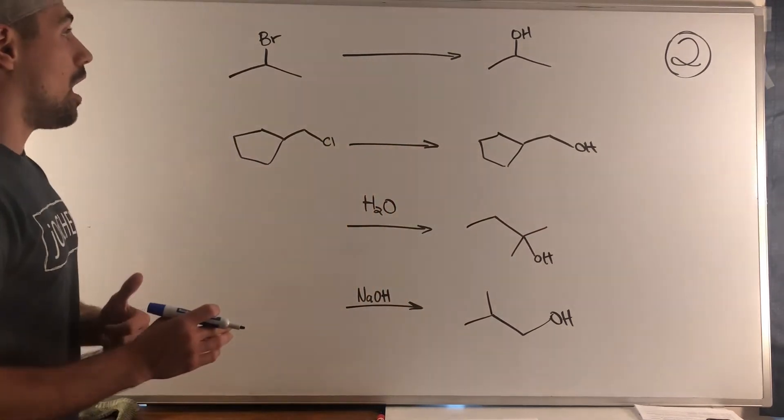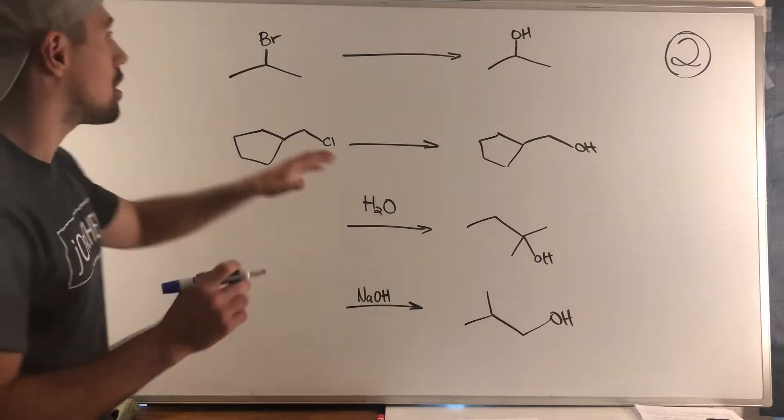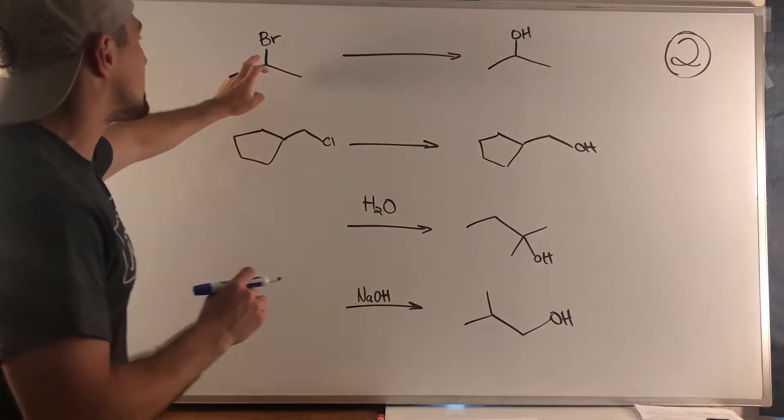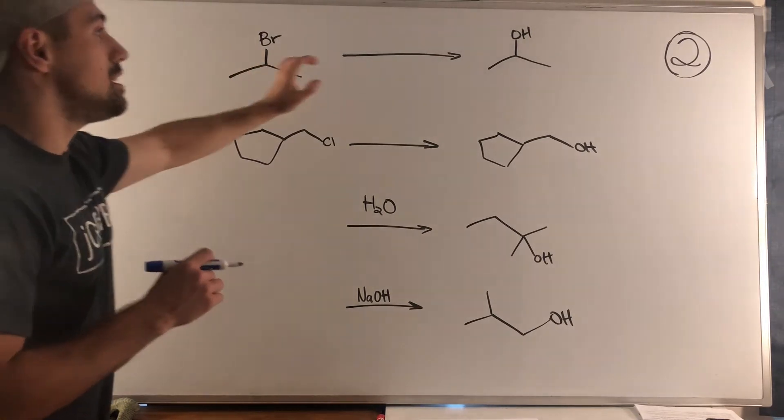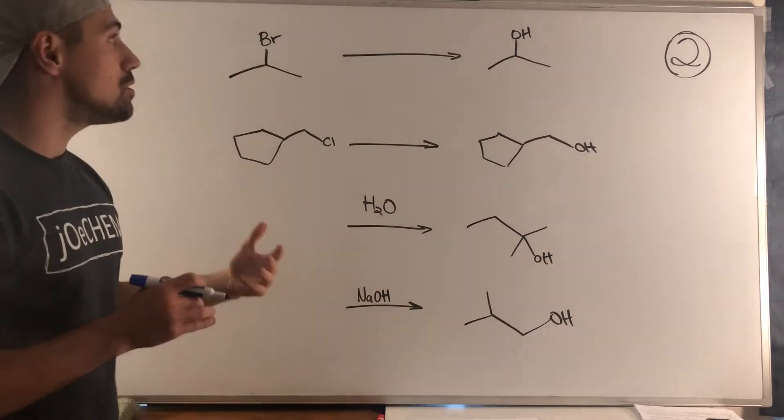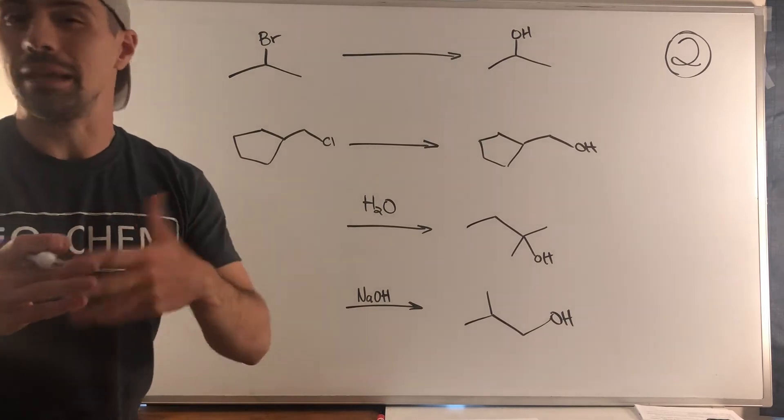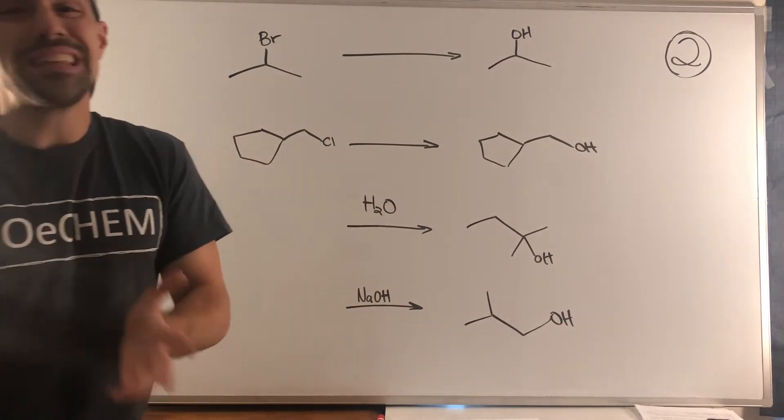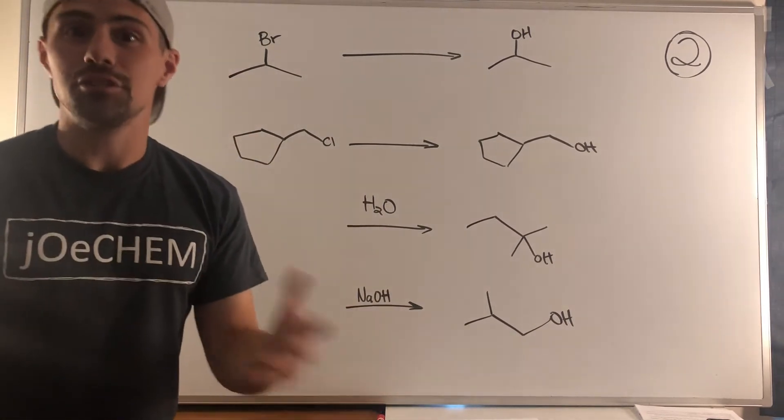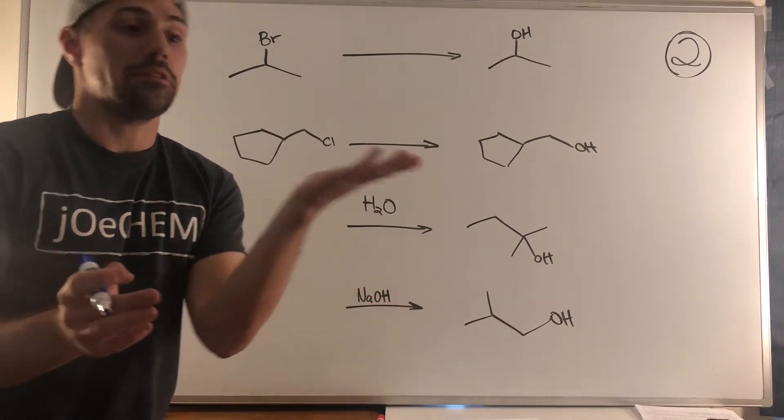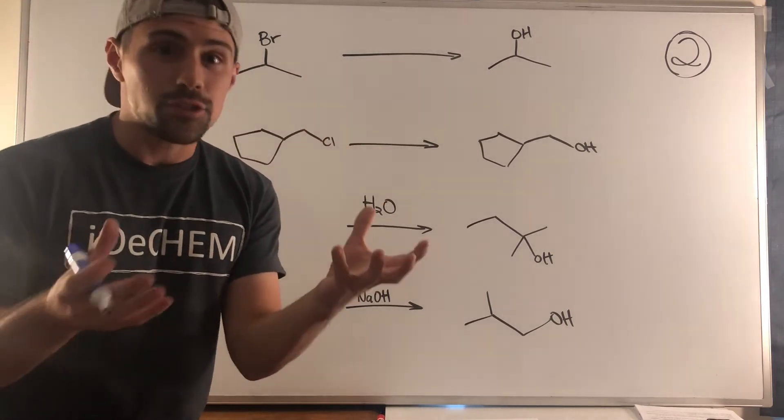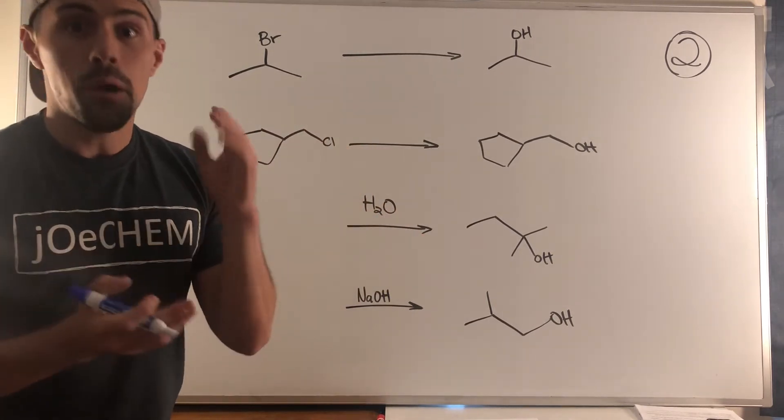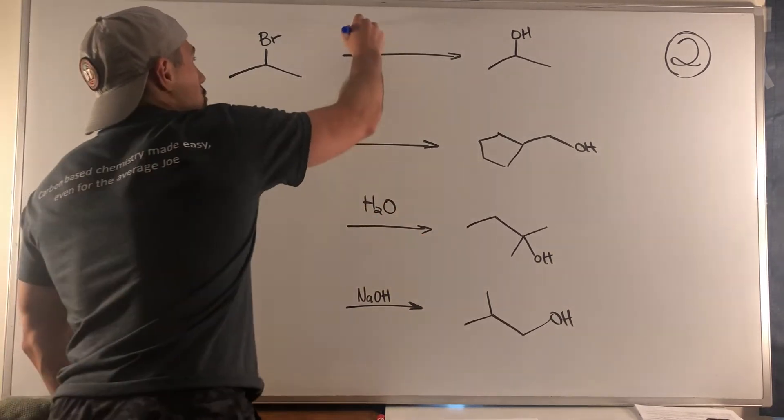In this problem we have a secondary substrate with a good leaving group, and we need to produce an alcohol. Could we use sodium hydroxide? Yes, but we're in that weird secondary situation and OH- is an intermediate base and nucleophile, so we're gonna get a weird mixture of E2 and SN2. But if we use something like H2O...